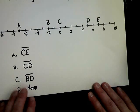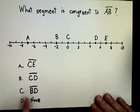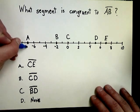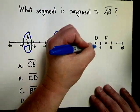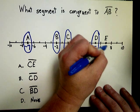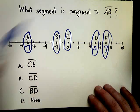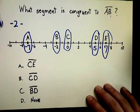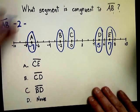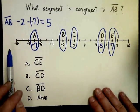Sometimes you will get questions like this one. Which segment is congruent to segment AB? Is it CE, CD, BD, or none of the above? I'm going to go ahead and help myself up by marking these up. This is at negative seven. This is at negative two. This one's at zero. This one's at five. And this one is at seven. So if I need to know how large AB is, A is here and B is here, so I would do negative two minus negative seven. And if you work that out, it will give you five. So AB's value is five.